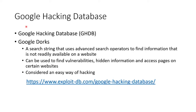The place we want to go is the Google Hacking Database, the GHDB, and from there we're going to do some Google dorking. Google dorks are simply advanced search strings using those advanced operators to get information that is not readily available, but Google has already searched it for you. We can find all that hidden information and access pages on websites that are not supposed to be viewable. We're going to go to exploitdb.com, to the Google Hacking Database, and they will lay it out for us.